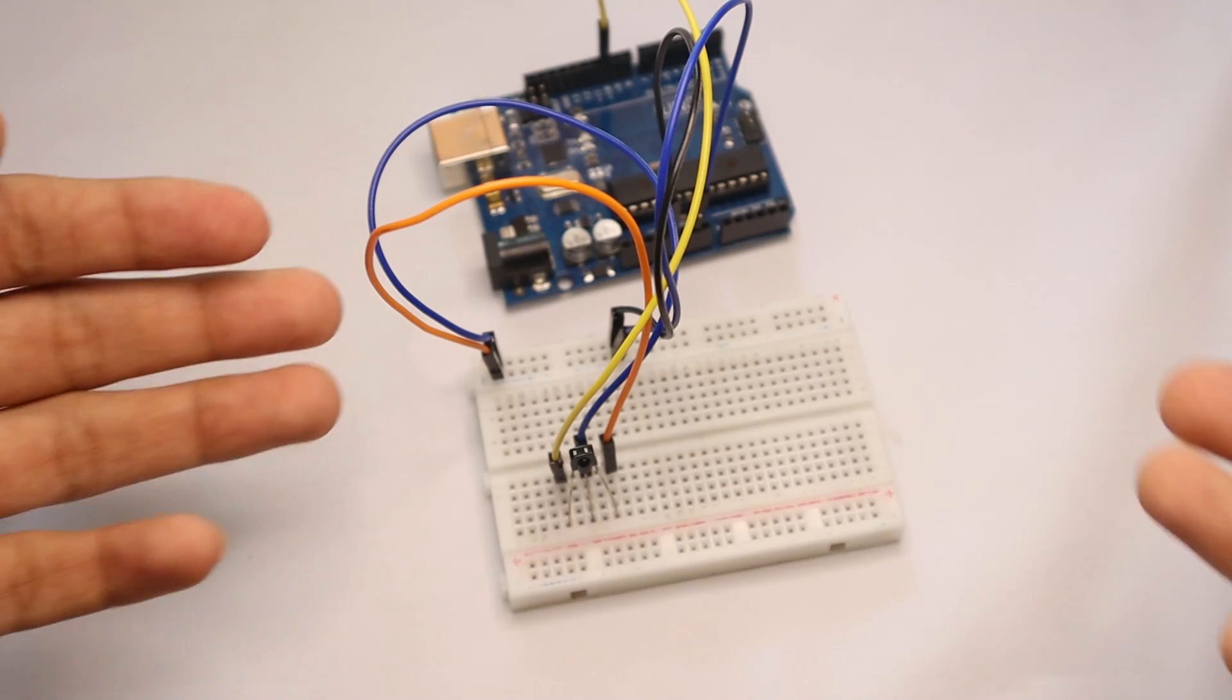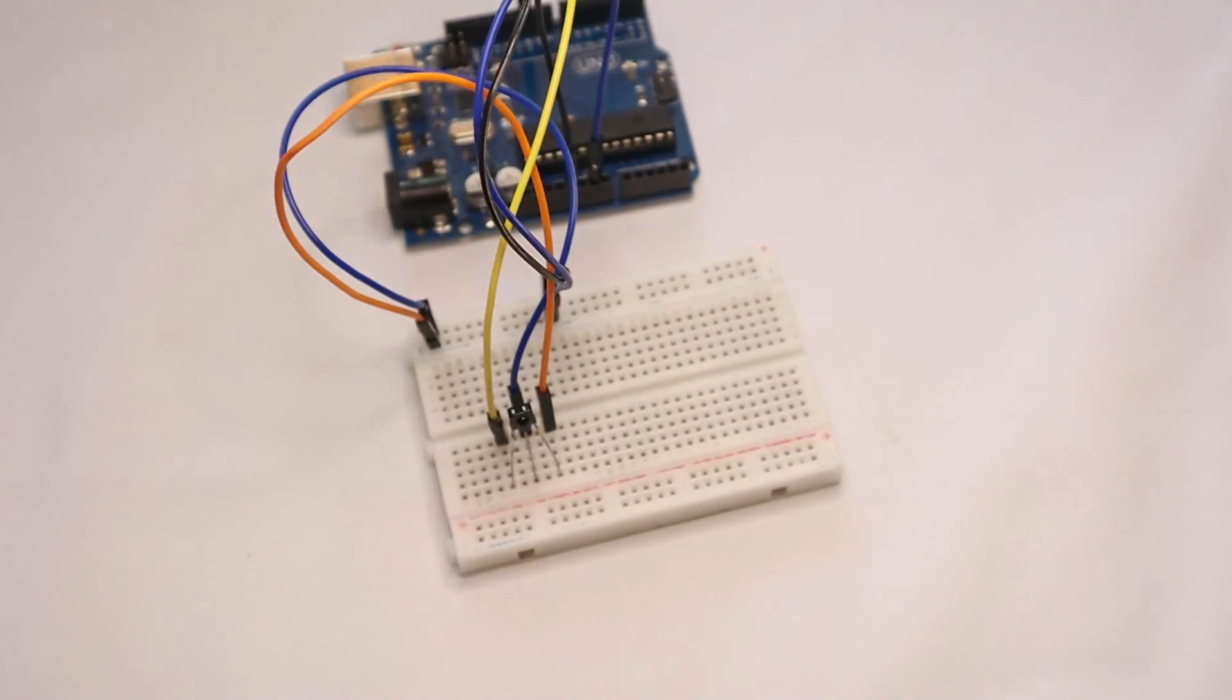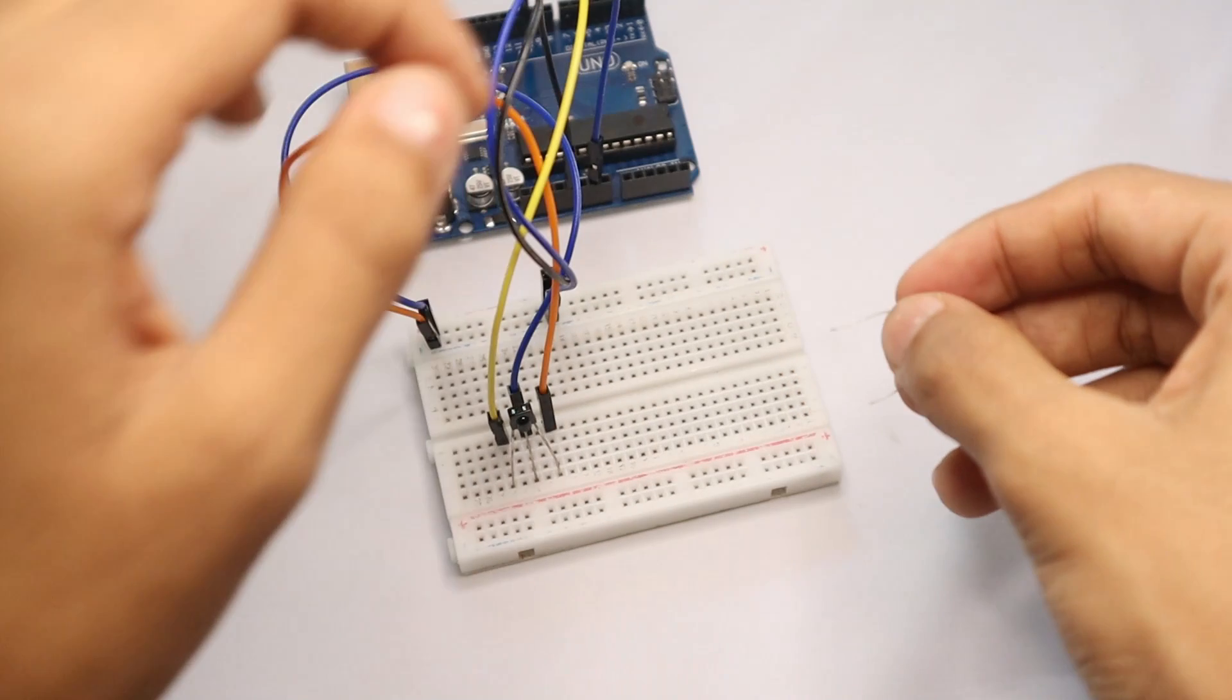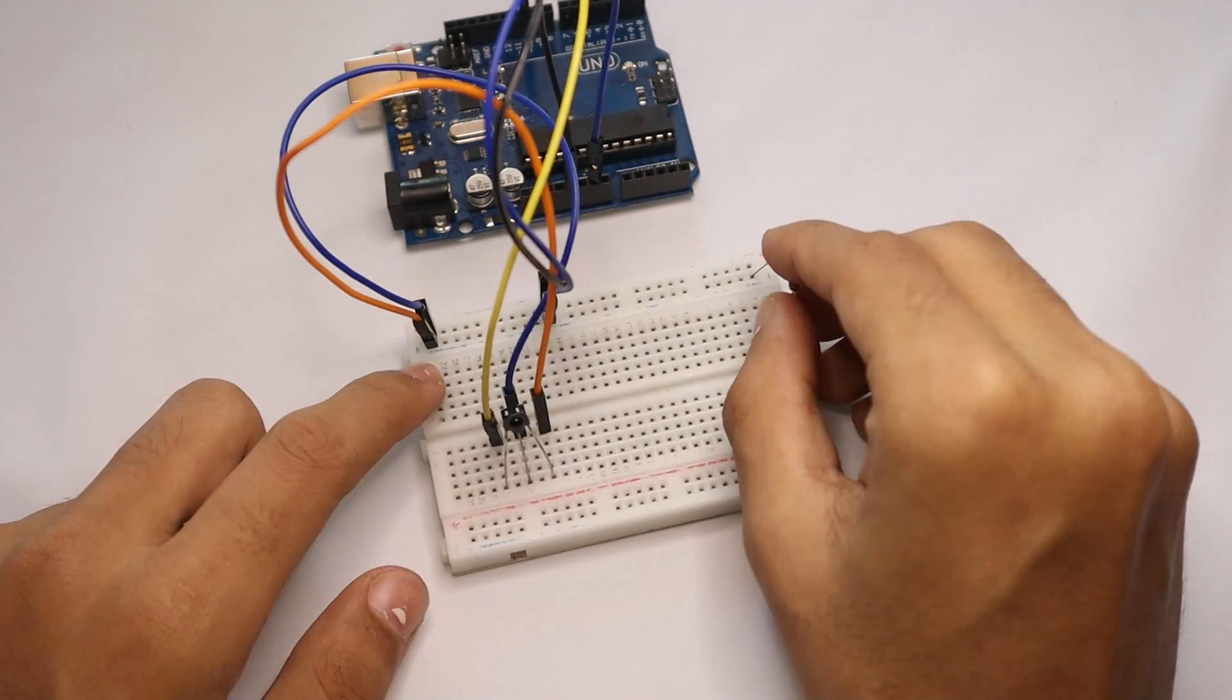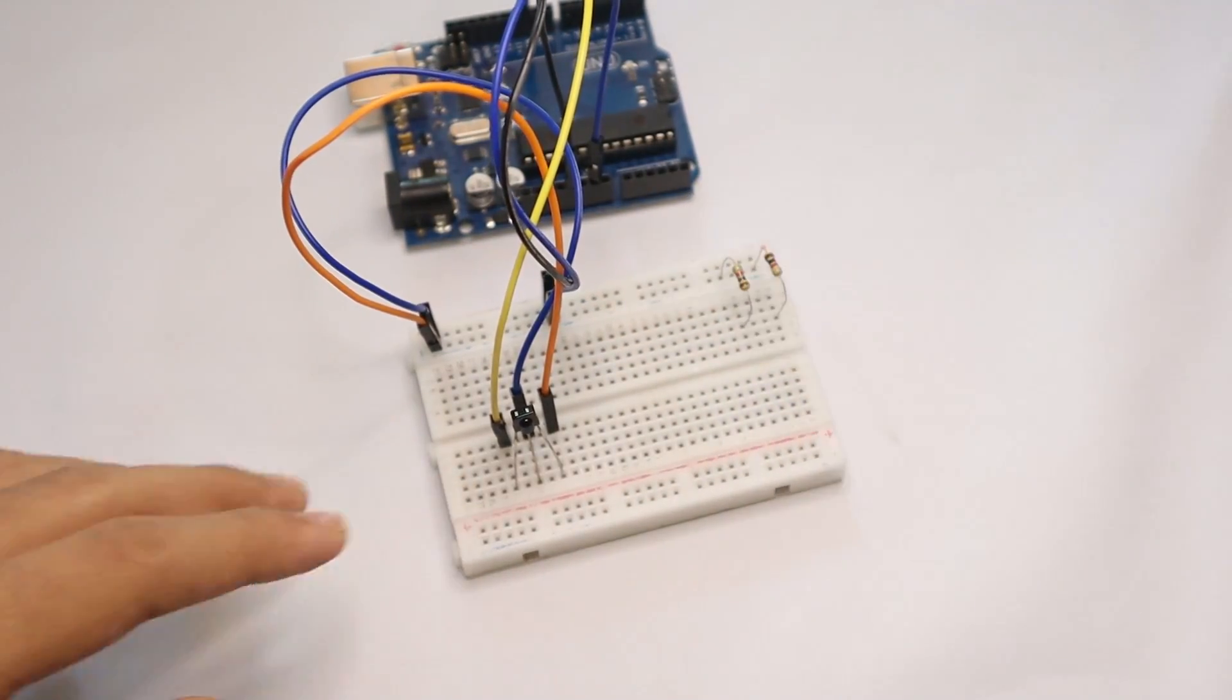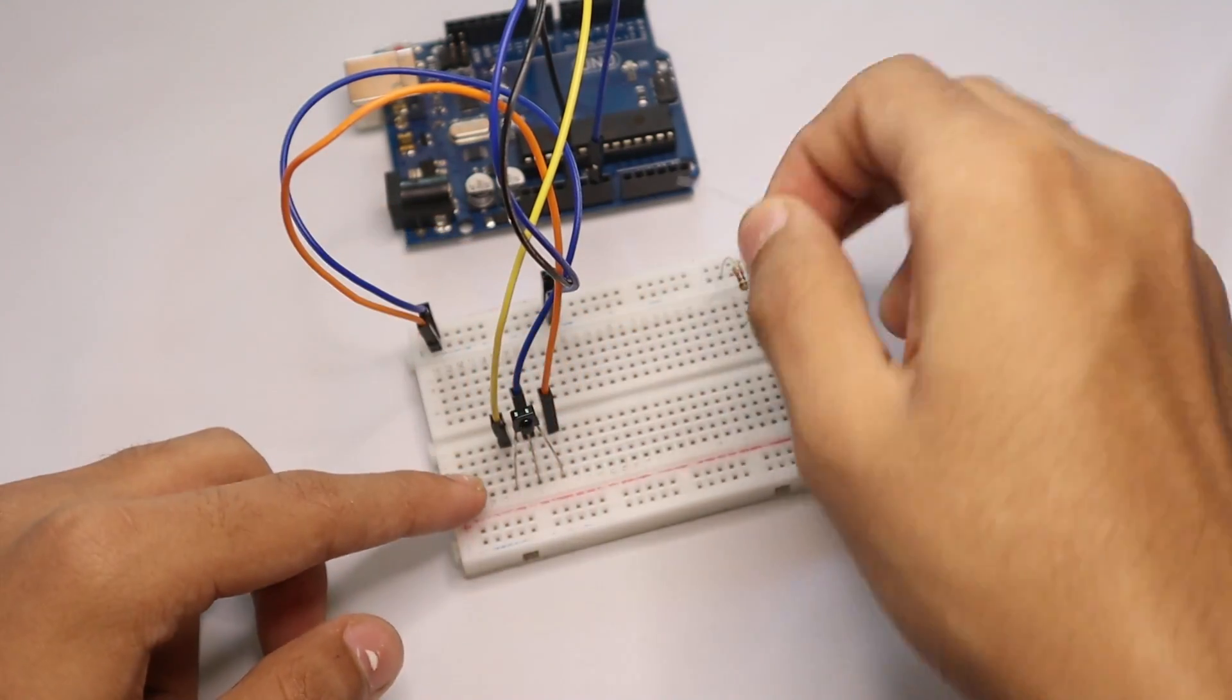Now the next step is to put on our LEDs and resistors. Now after you have coded your Arduino, now let's connect it. Now this is the diagram how you need to connect the resistors. So one side to the negative and the other side to any of these bars. Make sure to leave space for the LEDs.